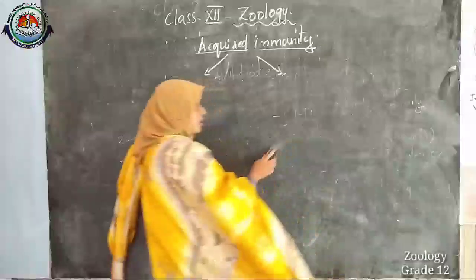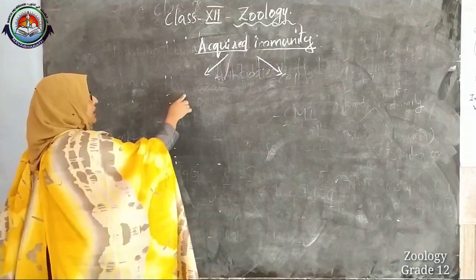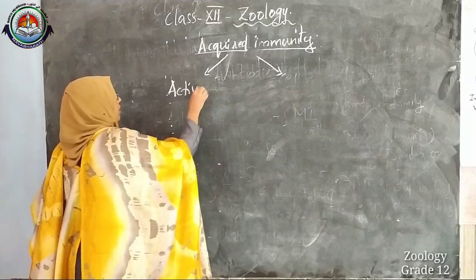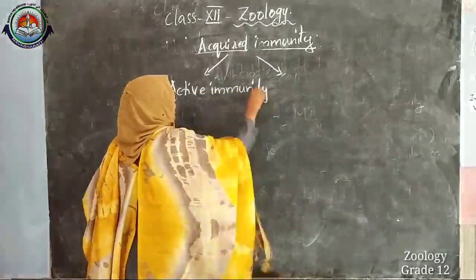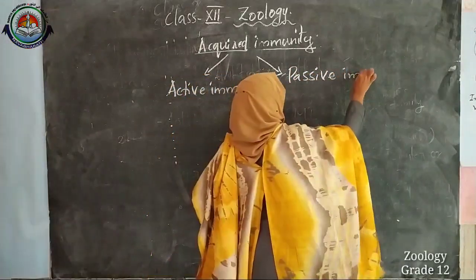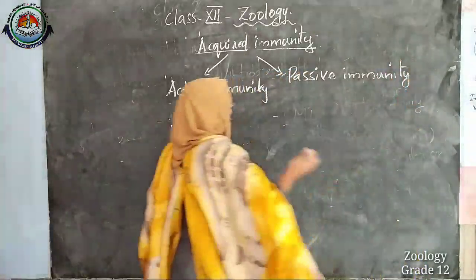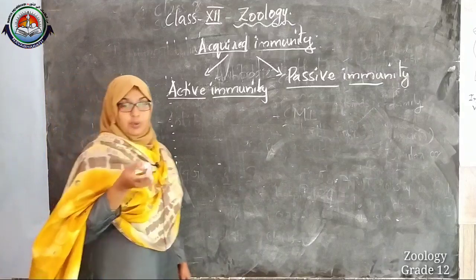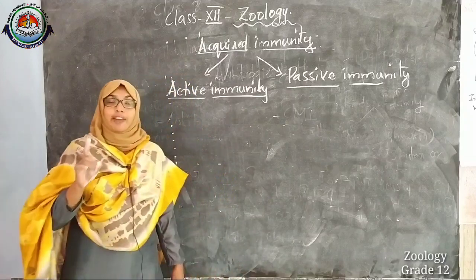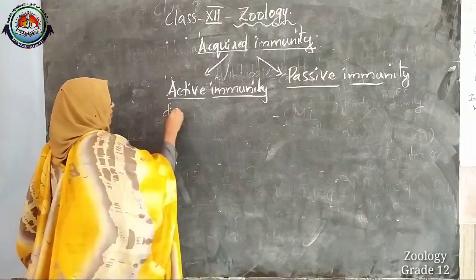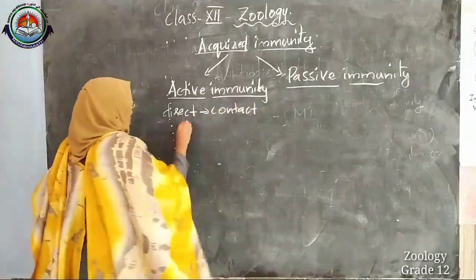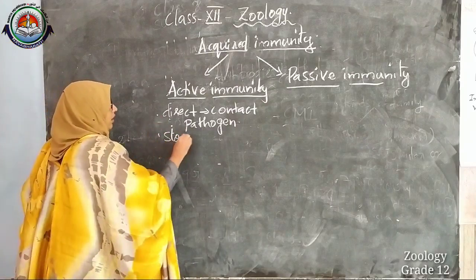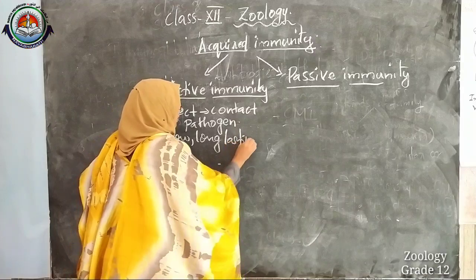We discussed humoral immunity and cell mediated immunity. Now we are going to see active immunity and passive immunity. Active immunity is produced when the person has direct contact with the pathogen. It may be slow but it is long lasting.